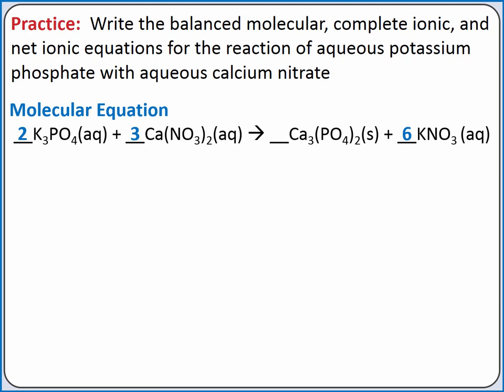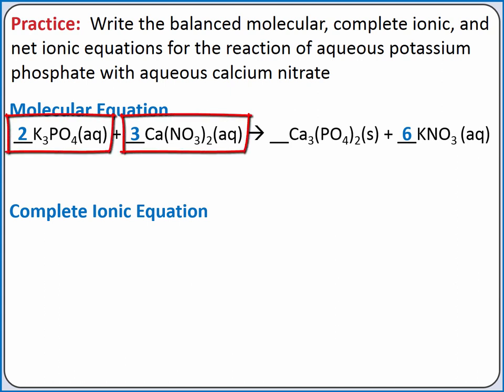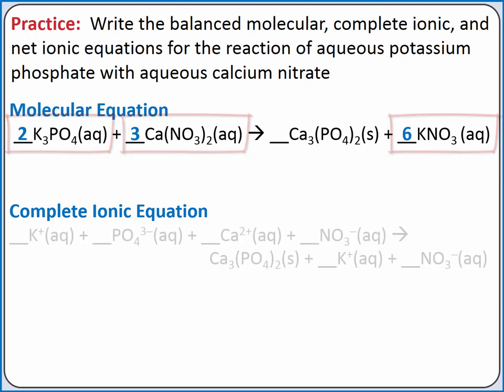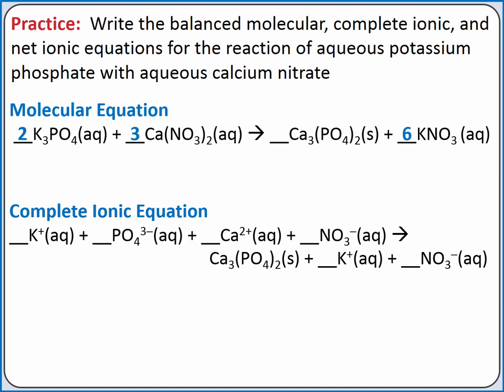Next, we can write the complete ionic equation by splitting apart any strong electrolytes. Potassium phosphate, calcium nitrate, and potassium nitrate are all soluble ionic compounds, so they are all strong electrolytes. They get broken apart into their component ions. Calcium phosphate is insoluble, so it remains together as a solid.